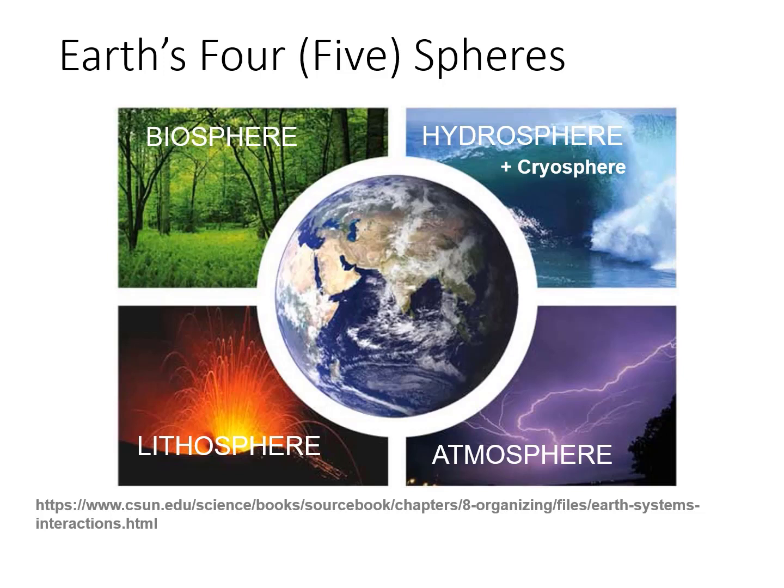The components of the Earth's climate system can be divided into one of four major Earth's subsystems: the lithosphere, the biosphere, the hydrosphere, and the atmosphere.